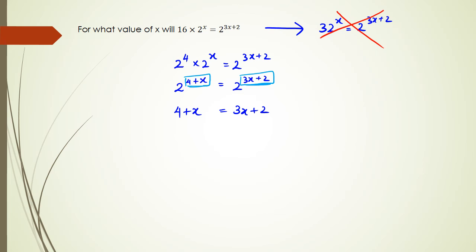So rearranging this, we're going to get 4. The 2, when it comes over to this side, it becomes minus, equals 3x. And then plus x, when it comes to this side, becomes minus x.